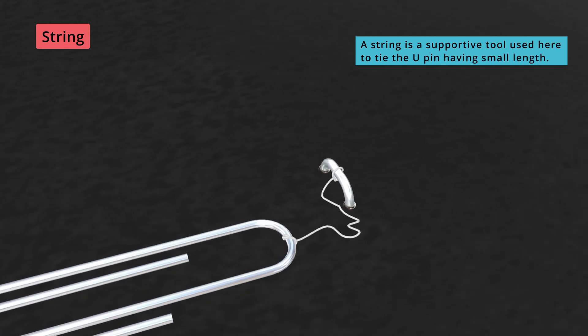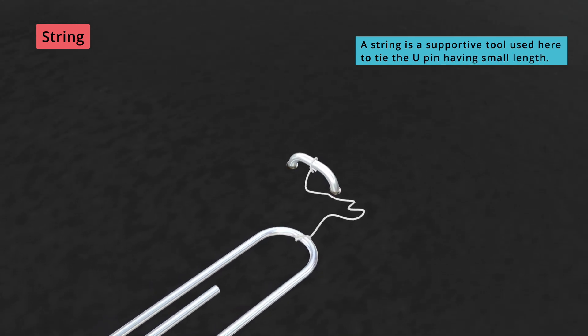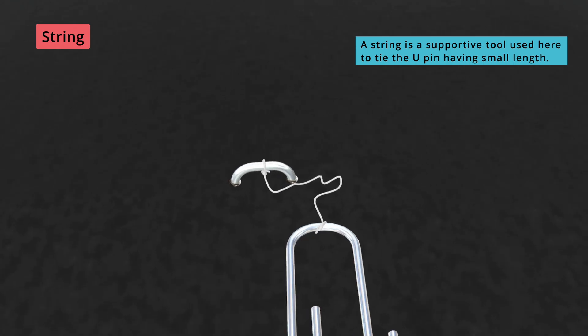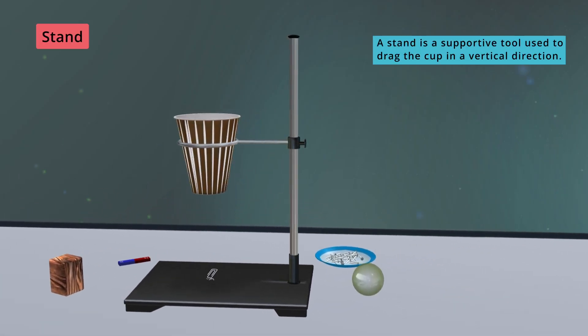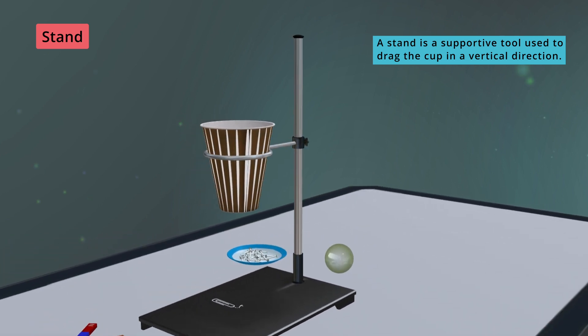String. A string is a supportive tool used here to tie the U-Clip having a small length. Stand. A stand is a supportive tool used to drag the cup in a vertical direction.